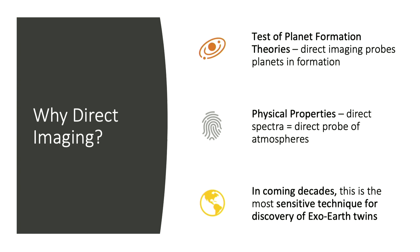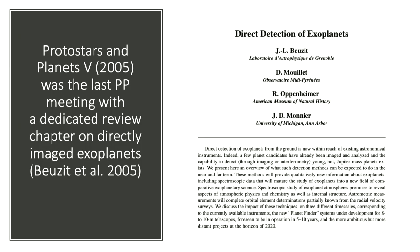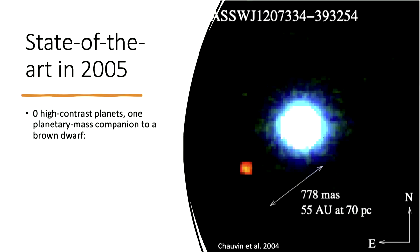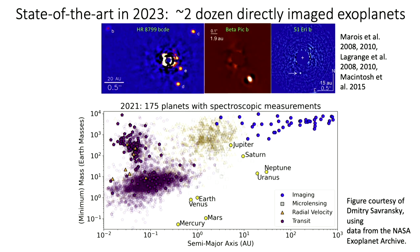The last time there was a dedicated review chapter on directly imaged exoplanets at a Protostars and Planets meeting was in 2005 — so it's been a while. Things have changed. Back in 2005, we had exactly zero high-contrast planets. This is 2MASS 1207b, a planetary mass companion to a brown dwarf — our one singular planetary mass companion known at that time. In the last 20 years, we have now imaged about two dozen directly imaged exoplanets.